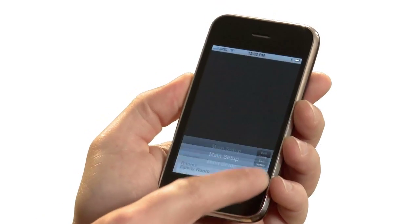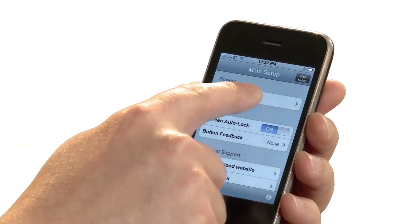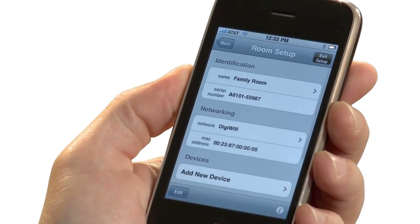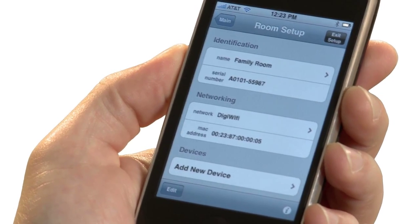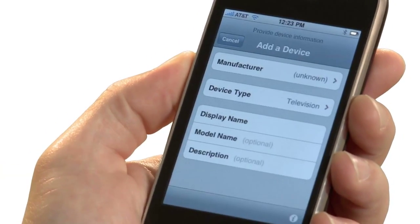Let's start by creating a device. First, let's open up the Setup tab again and select Family Room. Family Room includes a list of all devices and activities we have configured to use there. Since we don't have anything yet, let's choose Add New Device.